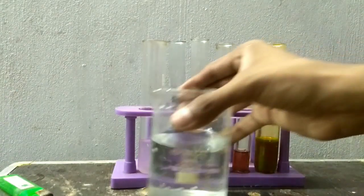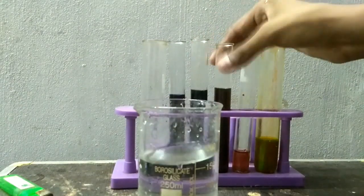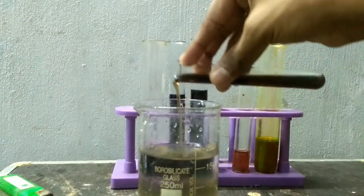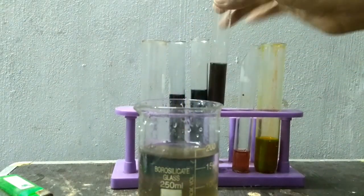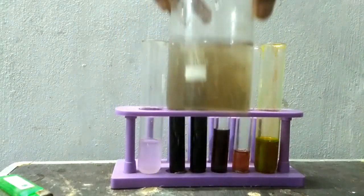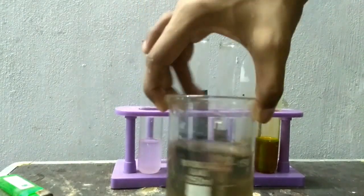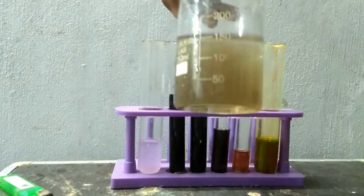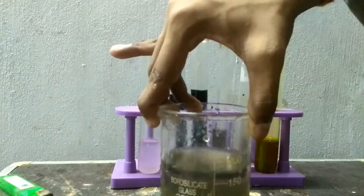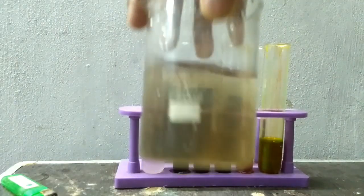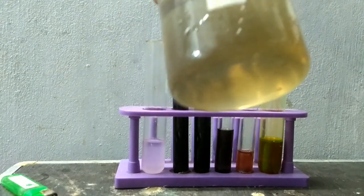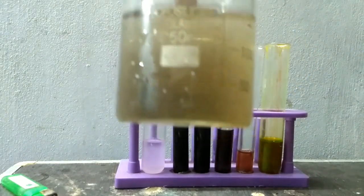Now I will pour beta naphthol to it. This is beta naphthol one. Let's observe. It has a light green color. It has a light green color or rather a dirty green color we can say.